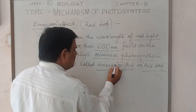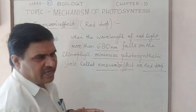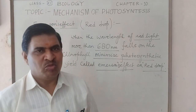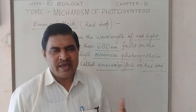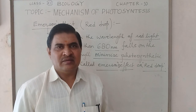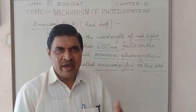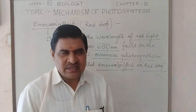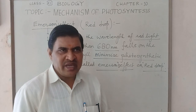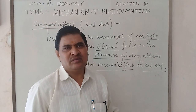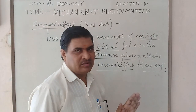The Emerson effect is known as red drop — minimized photosynthesis where wavelength more than 680 nm is utilized. As discussed previously, at longer wavelength, the pigment has less energy, and with less energy, photosynthetic yield is minimized. This is called the Emerson effect or red drop.